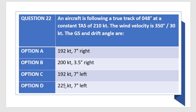The question states: an aircraft is following a true track of 048 degrees at a constant TAS of 210 knots. The wind velocity is 350 degrees, 30 knots. We have to find the ground speed and the drift angle.